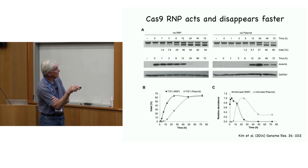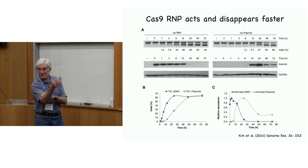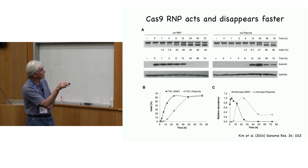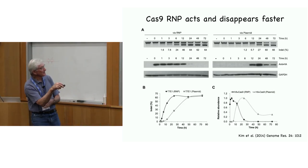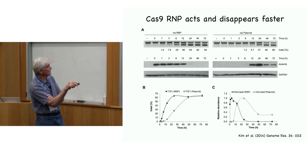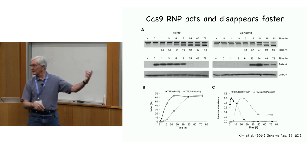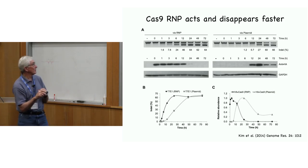With plasmid delivery, the Cas9 protein is continuously replenished and mutagenesis doesn't plateau for a couple of days. The disadvantage is that after on-target mutagenesis is finished, off-target mutagenesis can continue with this persistent Cas9 protein. With RNP delivery, things happen early and are finished in a short period of time.